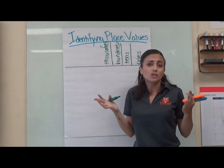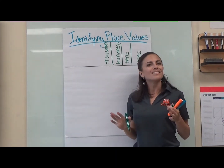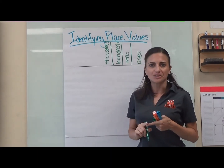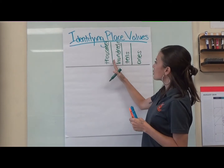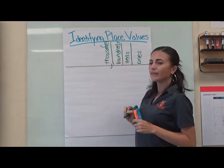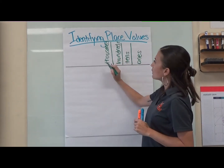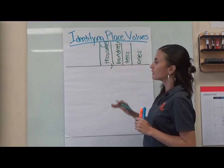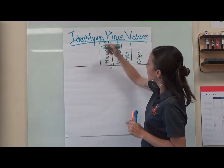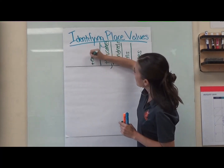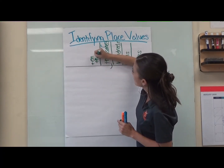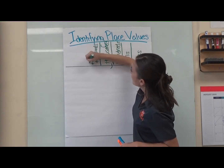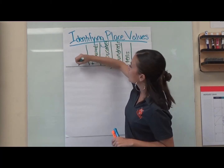Now these are the place values we already know. We have to add the new ones, but you'll notice it doesn't get too difficult because there's a pattern we're going to follow. We have our ones, tens, hundreds, then we put a comma to separate, and we get to our thousands. After our thousands we follow the same pattern: one thousands, ten thousands, and then we have our hundred thousands.